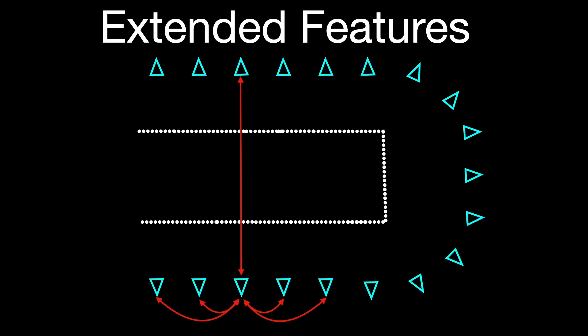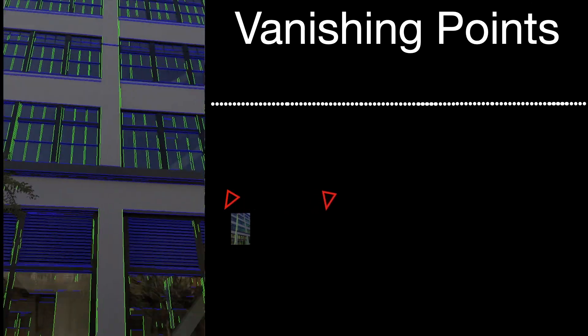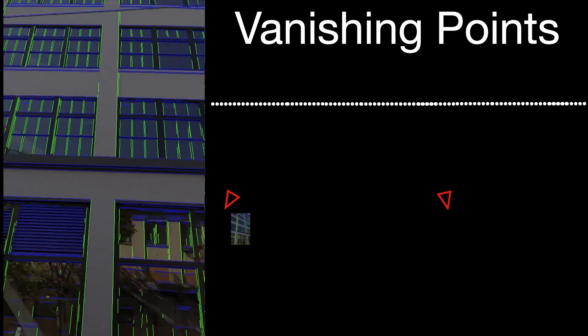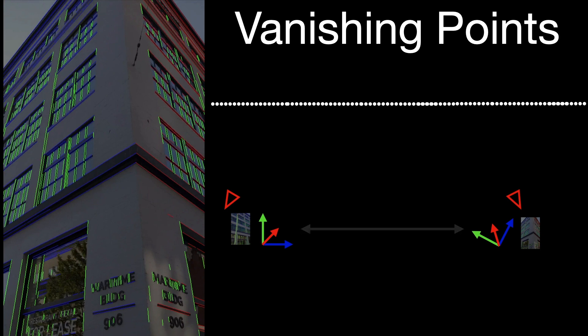We demonstrate two examples of extended features. For rotational drift, we use vanishing points as extended features. Even though frames may not observe the same parts of the scene, vanishing points are estimated per frame and can be easily associated across frames in a video sequence, providing drift-free global constraints on camera rotations.